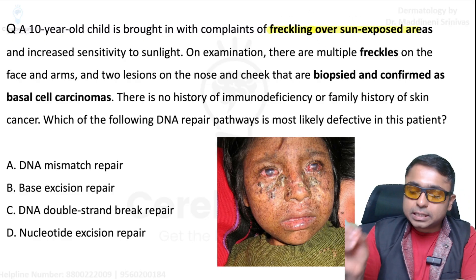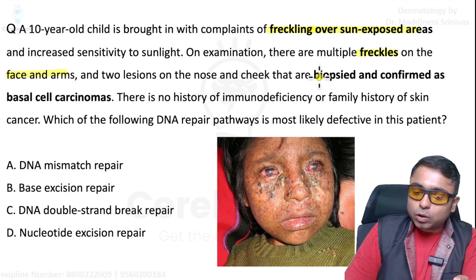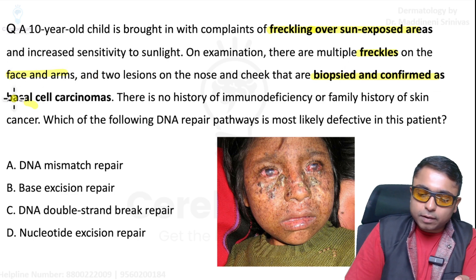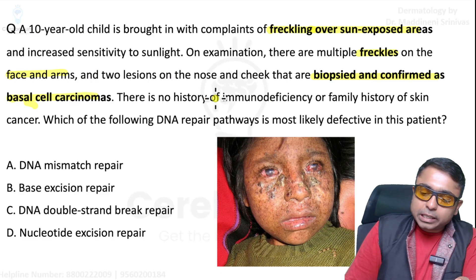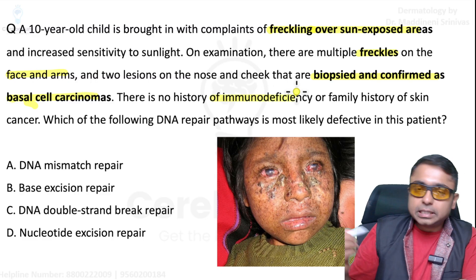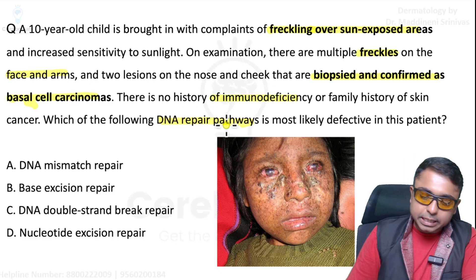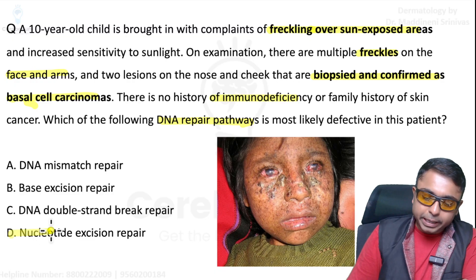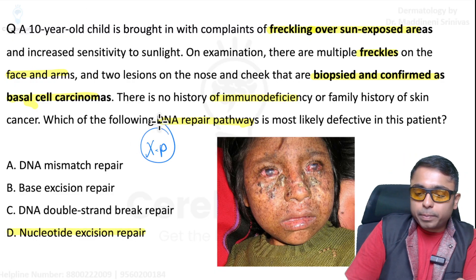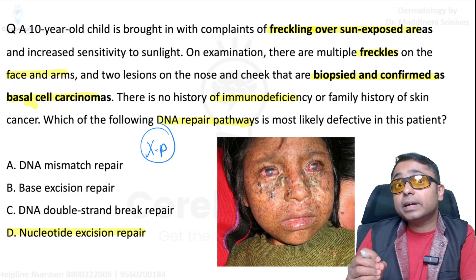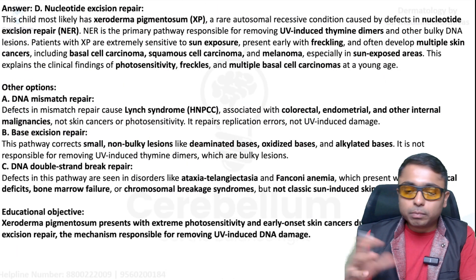This is a very repeated topic: freckling present on sun-exposed and photosensitive areas, freckles also on other body areas, biopsy confirms BCCs present in this patient, no family history of immunodeficiency, and a DNA repair pathway is implicated. The diagnosis is xeroderma pigmentosum — a very important topic from dermatology and biochemistry integration. The associated DNA repair pathway is nucleotide excision repair.